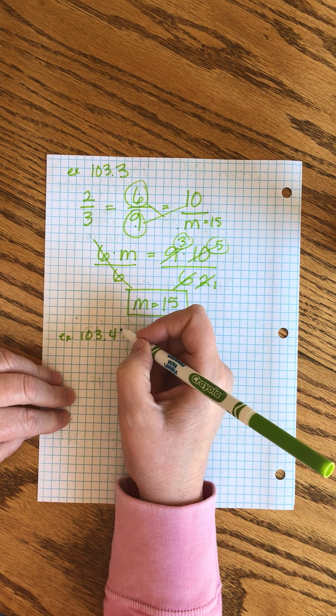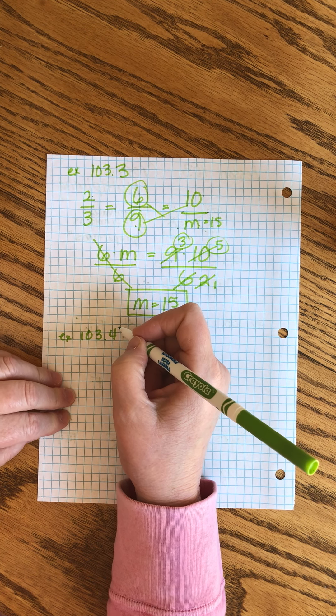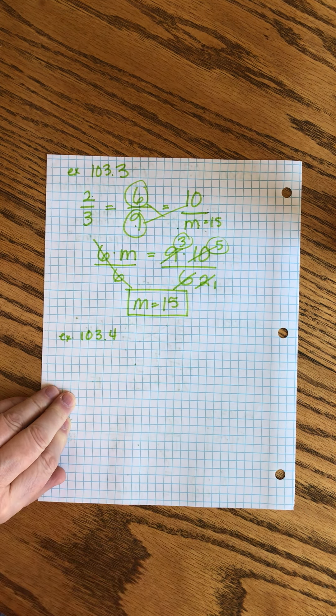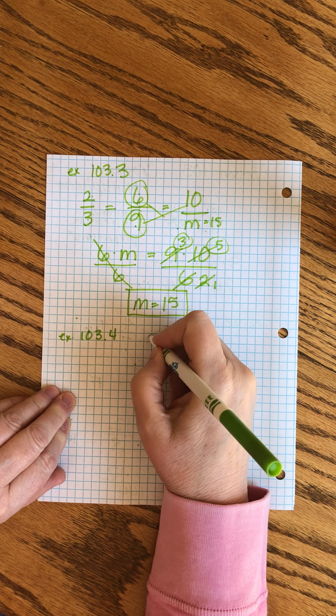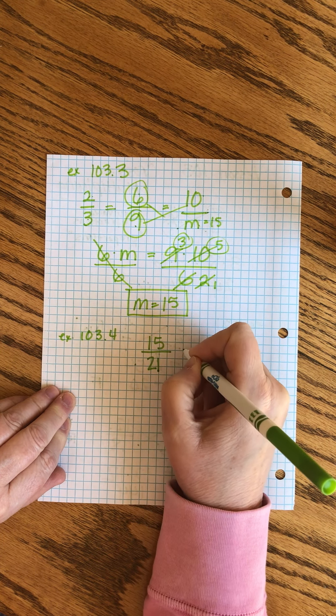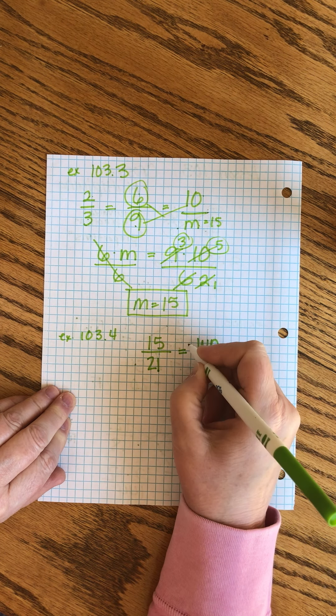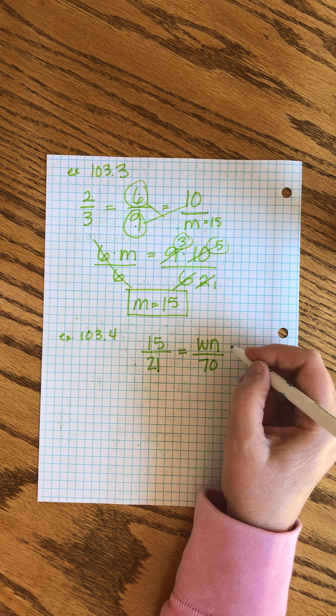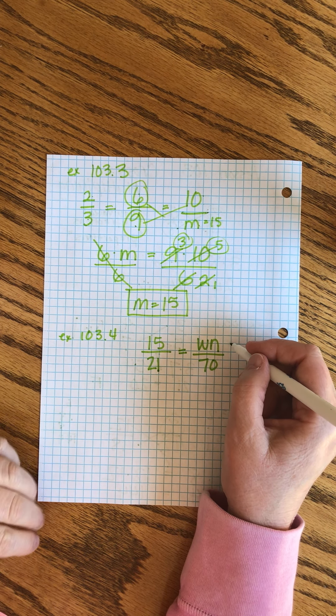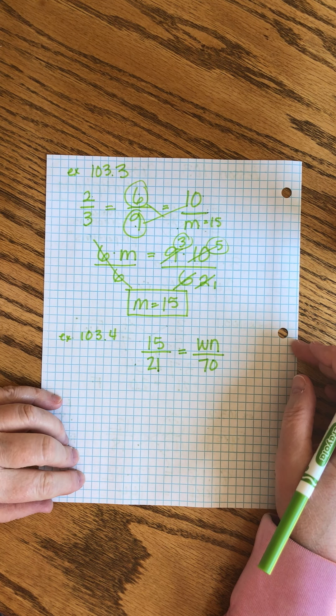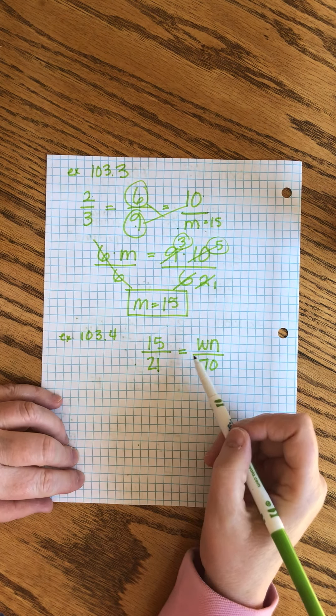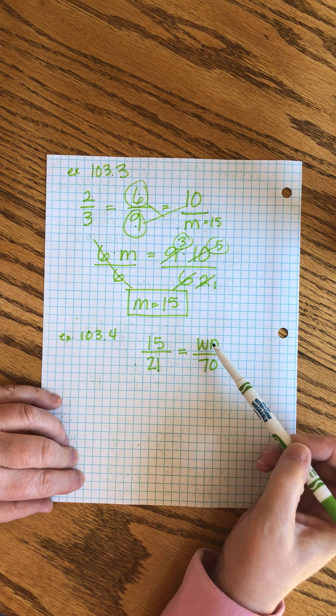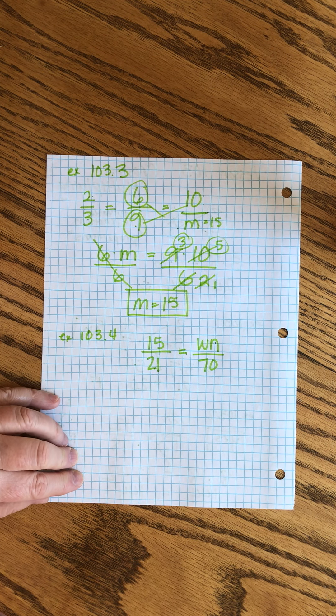Example 103.4, last one. Ready? Use cross products to find, that's cross multiplication, to find the missing term in the proportion. Now he gets us to it in words: 15 is to 21 as what number is to 70. Ready? I'm going to read it again. I'm going to write down the numbers as I do it. 15 is to 21 as what number is to 70. I just use two letters to stand for what number. That sometimes is easier. If you want to put an X there, that's fine. A letter goes here, and I used what number because that helps me match the sentence.